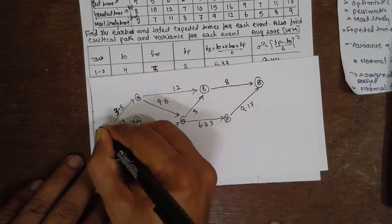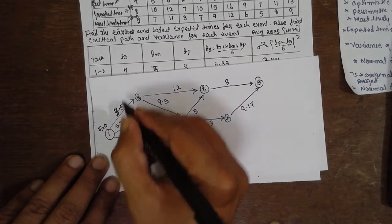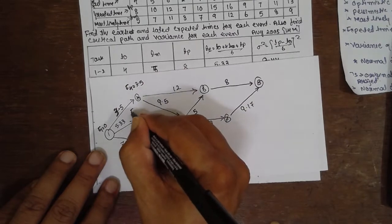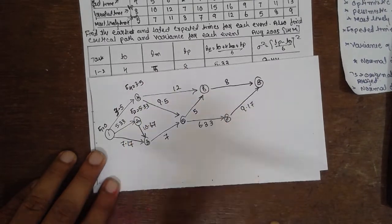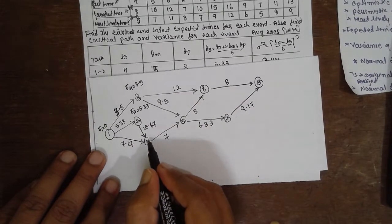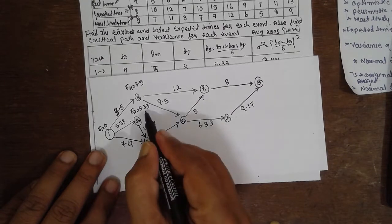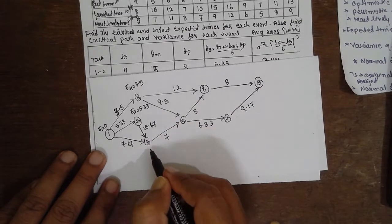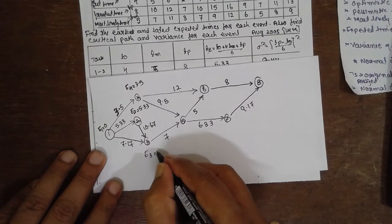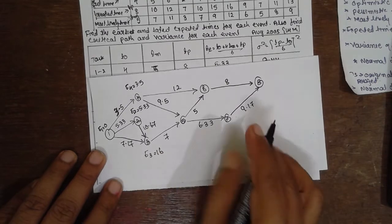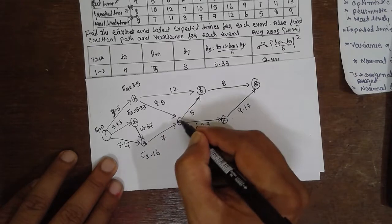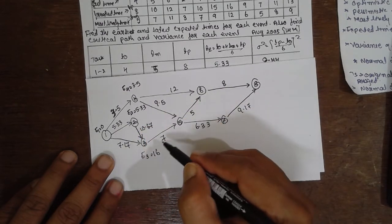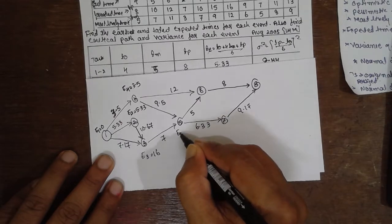Now compute the earliest event times (forward pass). E1 = 0. E4 = 0 + 3.5 = 3.5. E2 = 0 + 5.33 = 5.33. For E3, select the larger value: 0 + 7.17 or 5.33 + 10.67 — the larger is 16, so E3 = 16. For E5, junction: 3.5 + 9.5 = 13 or 16 + 7 = 23 — select larger, so E5 = 23.